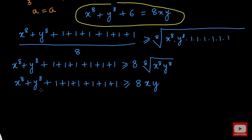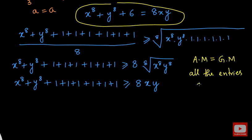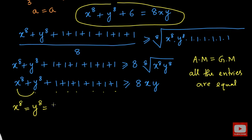When is the arithmetic mean equal to the geometric mean? The equality exists only when all the entries are equal to each other. Because of the equality given in the question, we can say that all the terms on the left side — x to the power 8, y to the power 8, 1, 1, 1, 1, 1, 1 — are all equal to each other. Which means x to the power 8 equals y to the power 8 equals 1. This condition is obtained by using the AM-GM equality condition, and using this we can easily solve for the values of x and y.